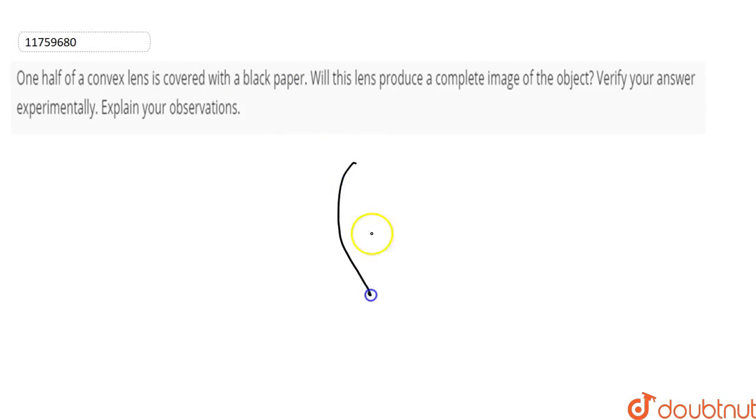This is my convex lens for example. This is the principal axis. This is my convex lens. If I say this half, I have covered it with black paper.